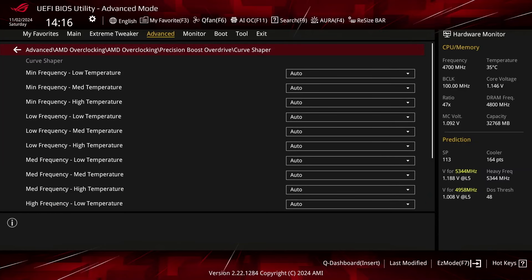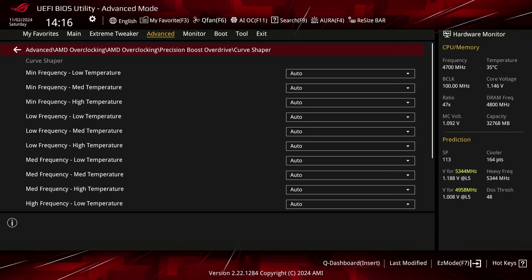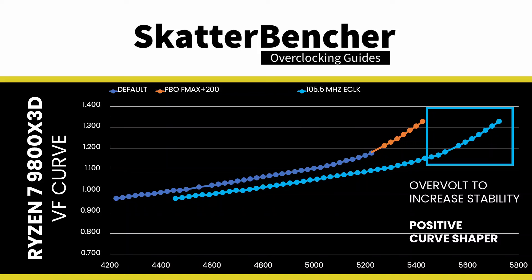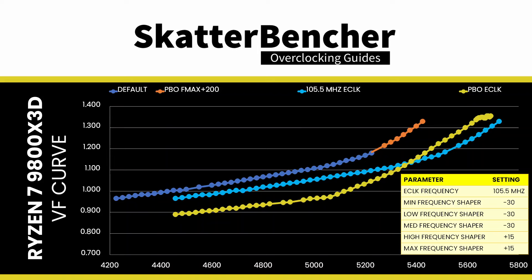Enter the Curve Shaper submenu. Here's where the real magic happens, as Curve Shaper allows us to fine-tune multiple regions of the VF curve. Setting a negative offset means the CPU will use less voltage for a given frequency and boost to a higher frequency at a specific voltage. Setting a positive offset means the CPU will use more voltage for a given frequency and boost to a lower frequency at a particular voltage. In our overclock, we use a combination of negative and positive curve shaper values — positive values to improve stability at the upper end of our eClock-adjusted VF curve, and negative values to aggressively undervolt at the middle and lower end of the eClock-adjusted VF curve.